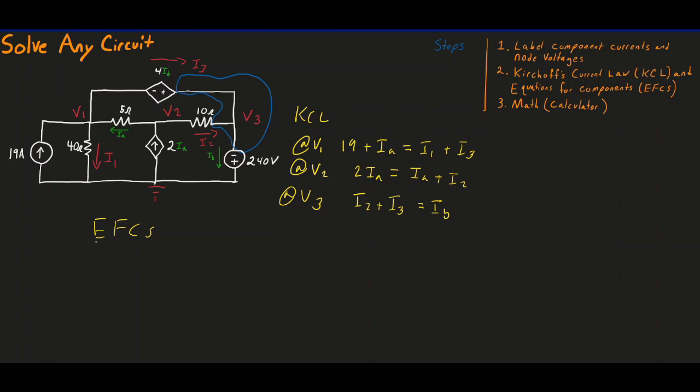The equation for that component is going to be that I1 is equal to the potential across it, which is going to be V1 minus zero, our ground node, divided by the resistance of 40. Now something very important to point out here, the direction that you subtract is incredibly important. You always want to subtract in the same direction as the current. So I1 is pointing from V1 to ground, you need to subtract from V1 to ground.